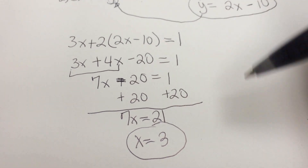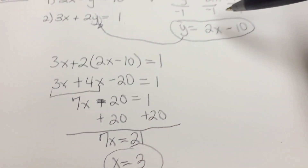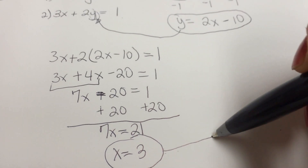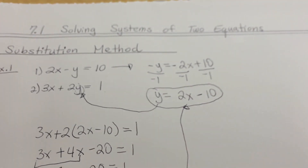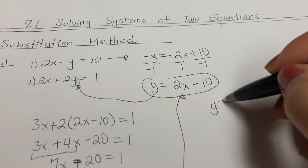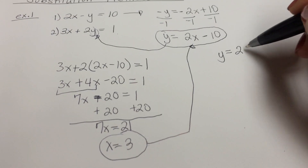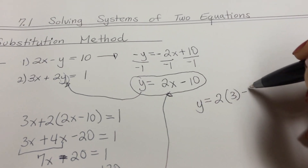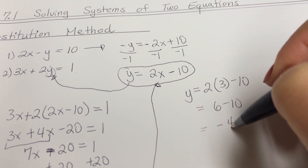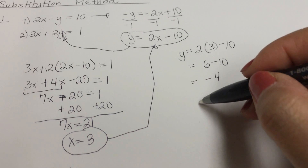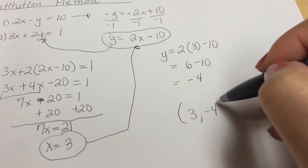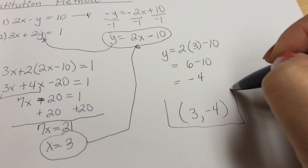That's one part, but remember we're solving for both x and y. I'm going to take this x and substitute it into the circled equation to find y. So y equals 2 times 3 minus 10, which is 6 minus 10, giving y equals negative 4. The final answer written in coordinate form is (3, negative 4).